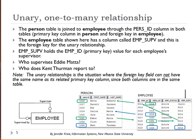By the way, in a unary relationship the foreign key field cannot have the same name as its related primary key column. Since both columns are in the same table, the foreign key must have a different name.